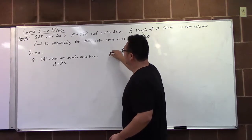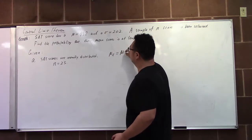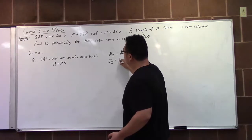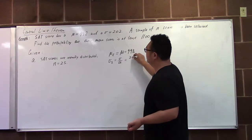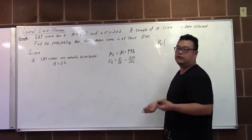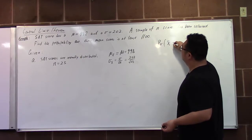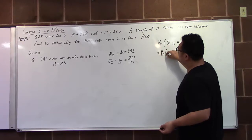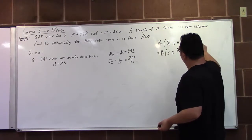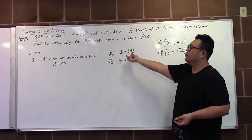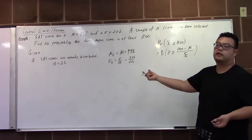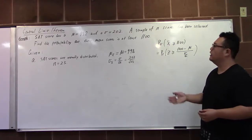The mean of the sample mean is the same as the population mean. The standard deviation of the sample mean will be the standard deviation of the population divided by the square root of n — that's 200 divided by the square root of 25. When we find the probability using the general formula for normal distribution, it's the cutoff score minus the mean divided by the standard deviation of the sample mean.